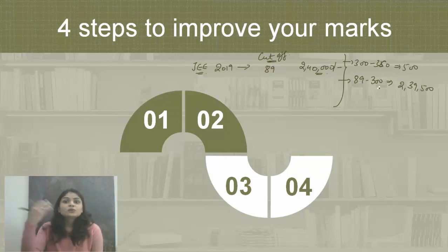Now, if you take out the average number of students on each mark, between 89 to 300, the average number of students on one single mark, if you will calculate, is 1150.